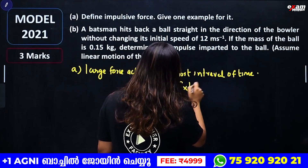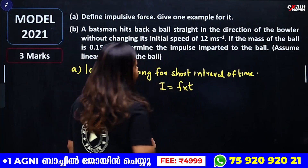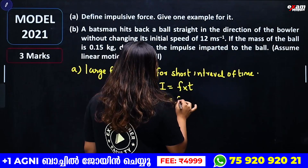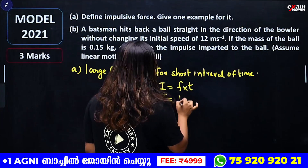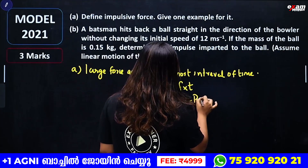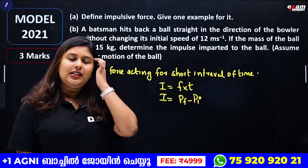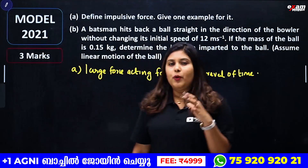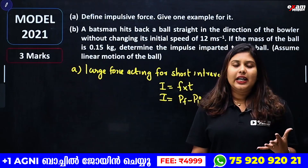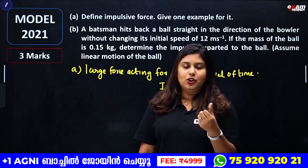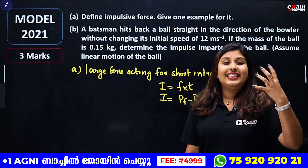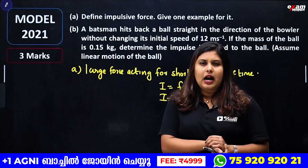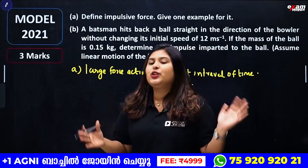The impulse equation is: Impulse = Force × time = change in momentum = final momentum minus initial momentum. Examples of impulsive force include penalty kicks, a sixer hit by a bat, and tennis play.